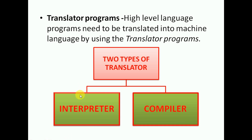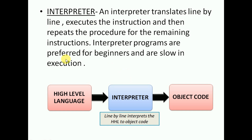For converting assembly language we had an assembler; for converting high level languages we have interpreters and compilers. An interpreter translates line by line — it picks up the first line, translates it, reports any error, allows you to debug it, executes that line, and then moves to the next line.